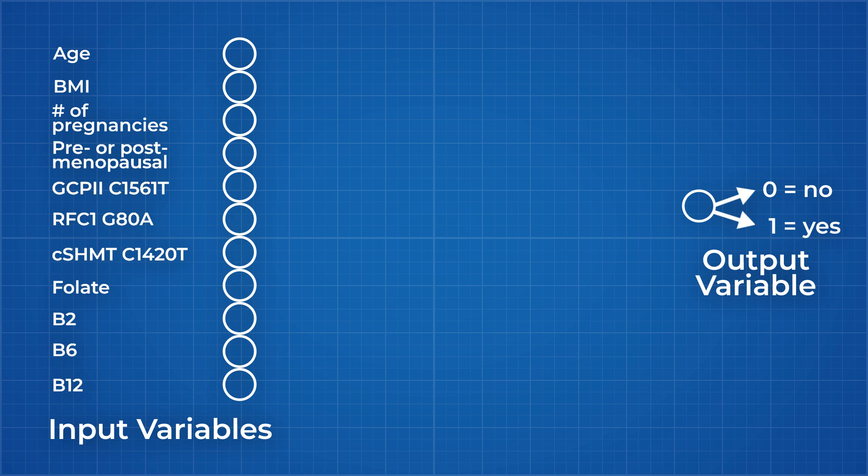So for the neural network to begin learning from this data, you first add your input data at the input layer. It then flows through the hidden layers, eventually arriving at the output layer.